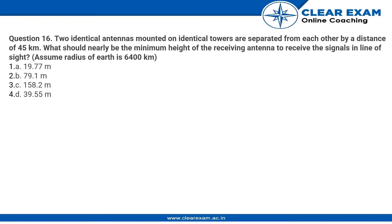Hello students, here is the question: Two identical antennas mounted on identical towers are separated from each other by a distance of 45 kilometers. We should find the minimum height of the receiving antenna to receive the signals in line of sight.